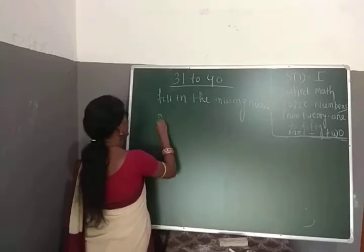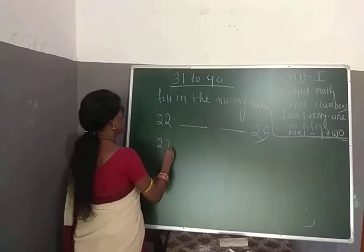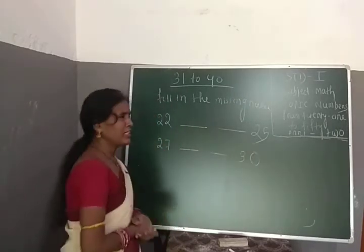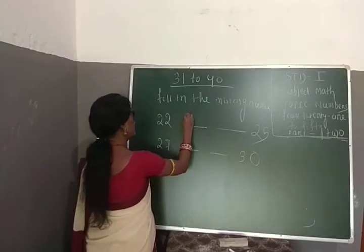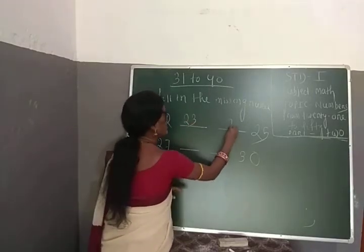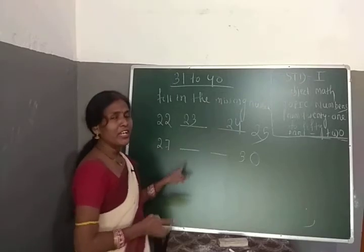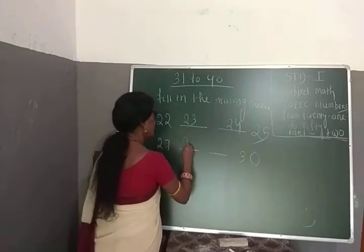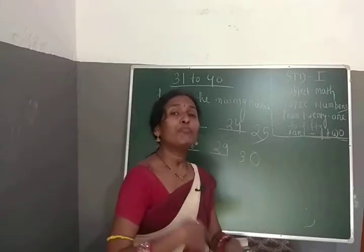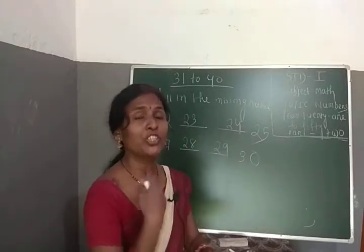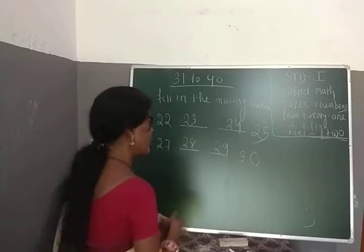Let's do a quick review. After 22 comes 23, and after 23 comes 24. In the next question, after 27 comes 28, and that is known as 29. Always speak the numbers in your mouth and pronounce them properly: 21, 22, 23, 24 — like this, then you can remember properly.